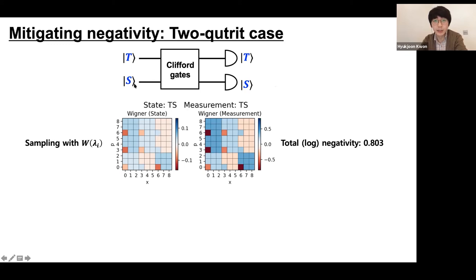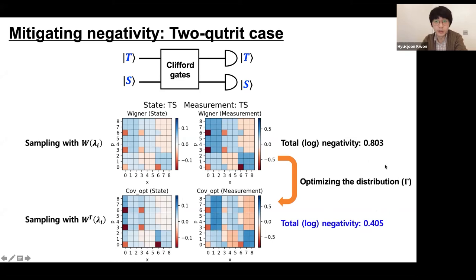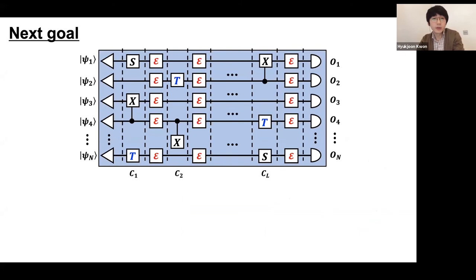If you prepare a T state and a strange state — another kind of magic state — after optimizing over the Wigner function distribution, there is some remaining negativity even after optimization. However, we can still mitigate it, and the total negativity has been almost halved by using this dynamical update and optimization over the parameterized quasi-probability distribution.